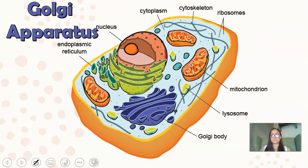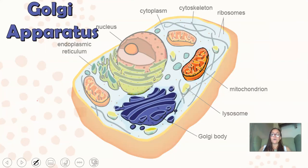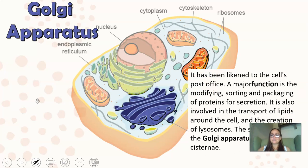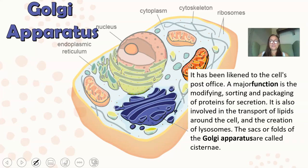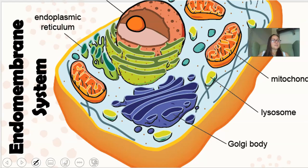The Golgi apparatus is a series of flattened discs or sacs. It functions like a post office — proteins made by ribosomes on the rough ER are sent to the Golgi, where they are packaged, modified, and sorted. They are then carried by vesicles from the Golgi to the cell membrane to be exported from the cell.